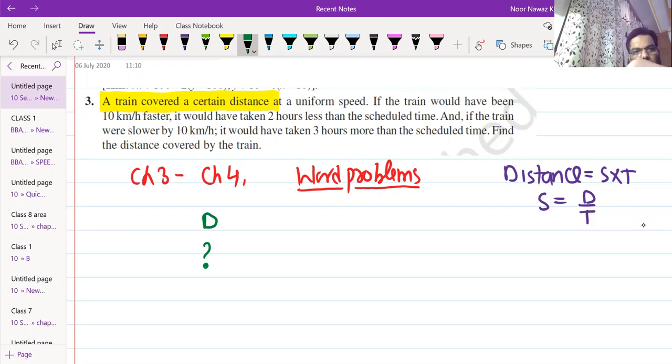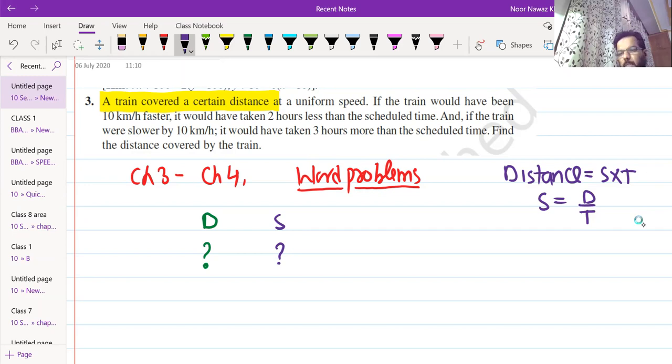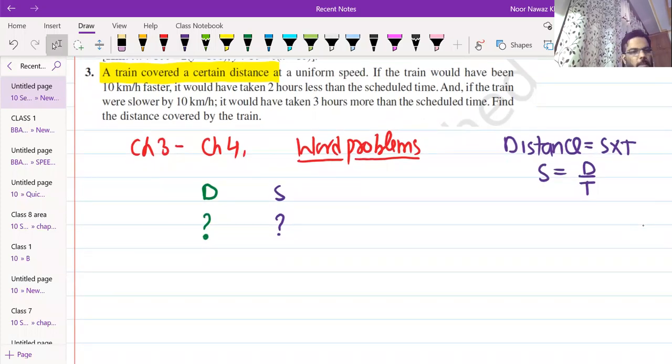At a uniform speed. If the train would have been 10 km per hour faster - it's chapter 3, last exercise question. Everything is given in the question itself. If the train would have been 10 km per hour faster, what is the meaning of this?